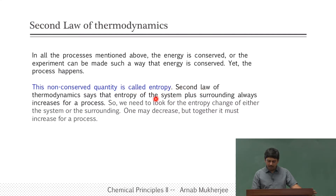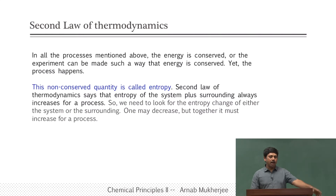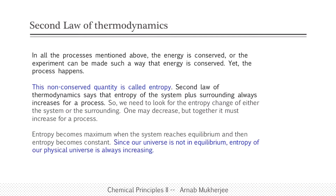This non-conserved quantity is called entropy, and the second law of thermodynamics says that the entropy of the system plus surroundings always increases for any process. Remember: system is whatever we talk about, and surroundings is everything else in the universe. So when we talk about system and surroundings, we are talking about the entire universe. Entropy becomes maximum when the system reaches equilibrium.